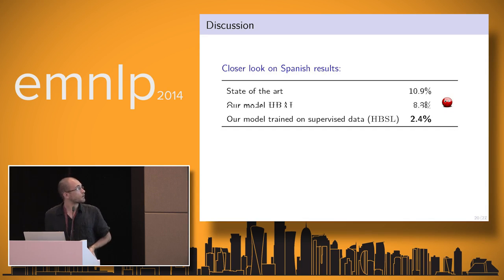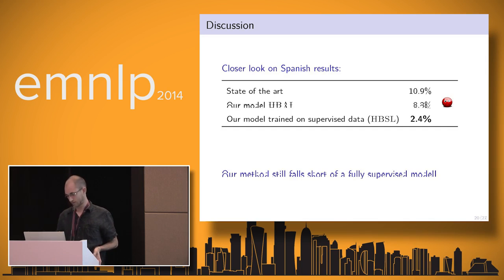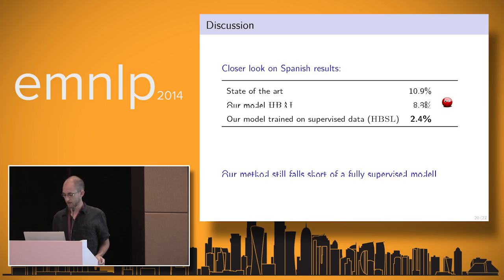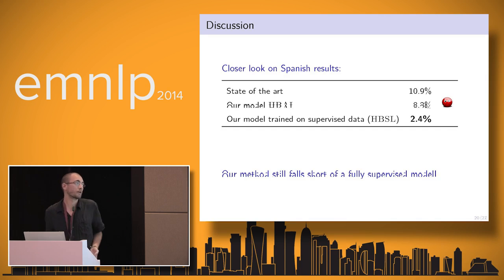Looking at our results, the state-of-the-art is about 10% error rate for Spanish, and we can improve this to 8.2%. The question is still: is 8.2% good enough? Unsupervised methods give about 30%, which was not good enough for further application. But comparing with supervised learning using the same model, we're only at 2% error rate — so this is four times worse than standard supervised learning.